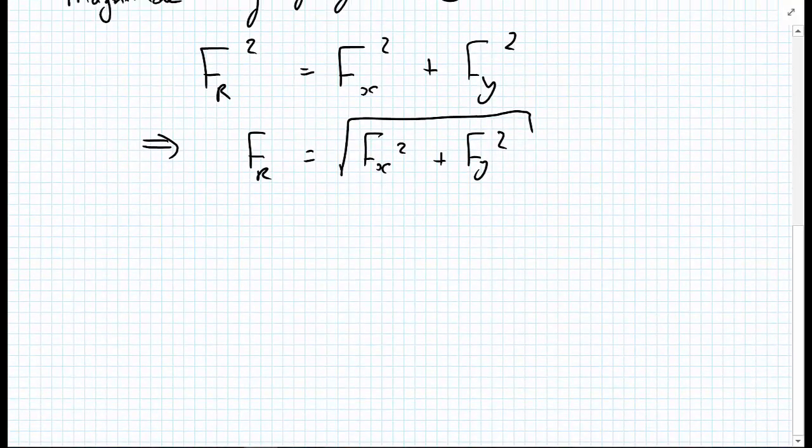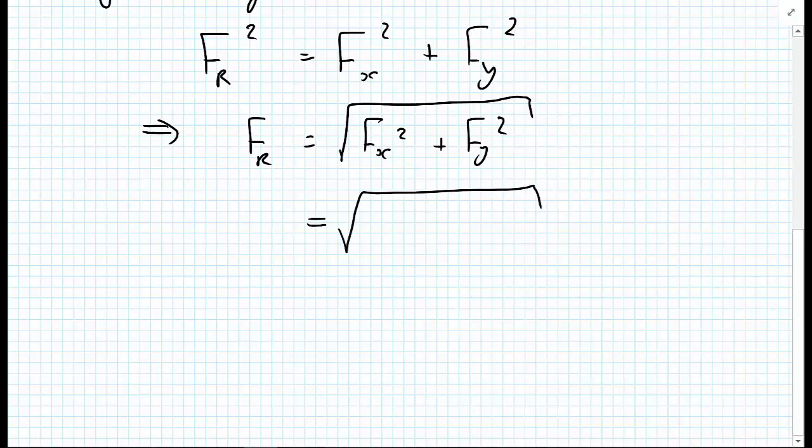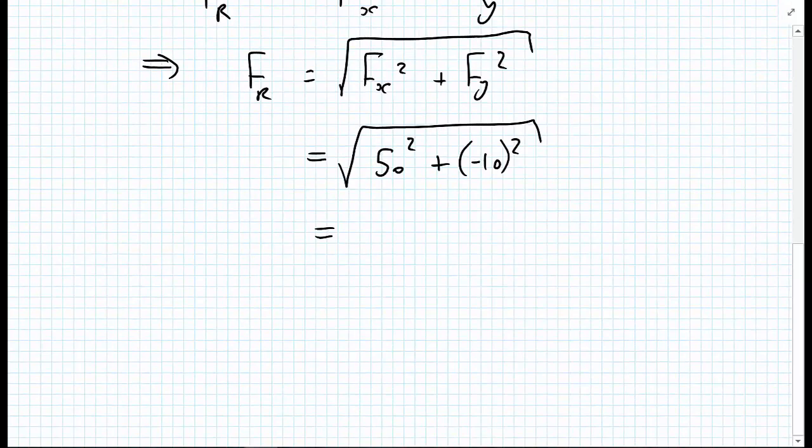We throw in the numbers that we know for the Fx and Fy vectors. We have the square root of 50 squared plus the minus 10, all squared, which gives us that the magnitude of the resultant vector is 51 Newtons.